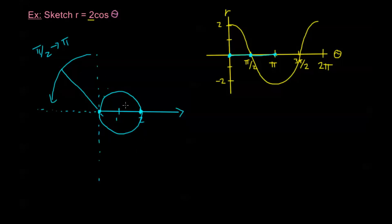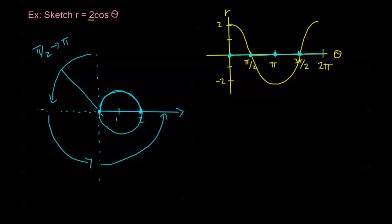From pi to 3 pi over 2, r goes from negative 2 to 0, so the points actually retrace the first side of the circle in quadrant 1. Then from 3 pi over 2 to 2 pi, r changes from 0 to 2, retracing the other side again. The result is a circle centered at 1 with radius 1.